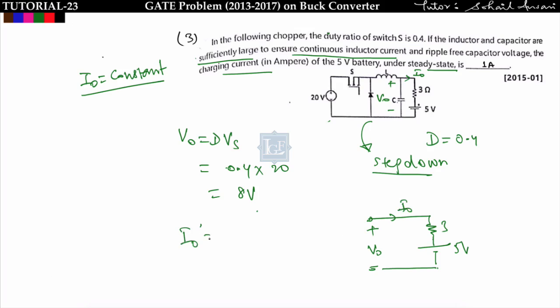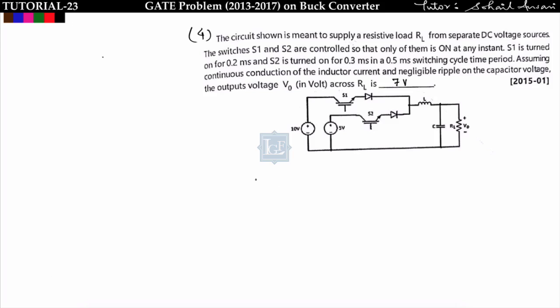V0 is connected with a 3-ohm resistor and 5-volt battery. Applying KVL, the output current I0 = (V0 - 5) / 3 = (8 - 5) / 3 = 1 ampere.